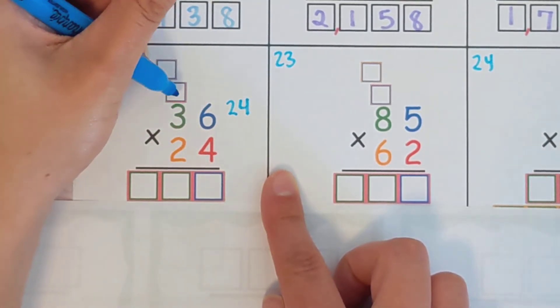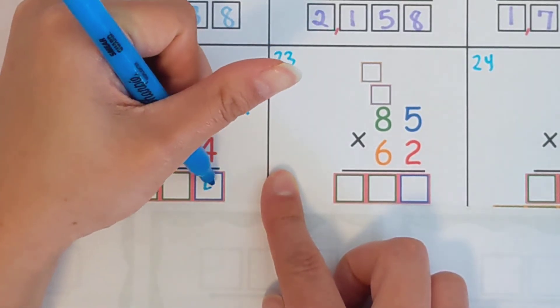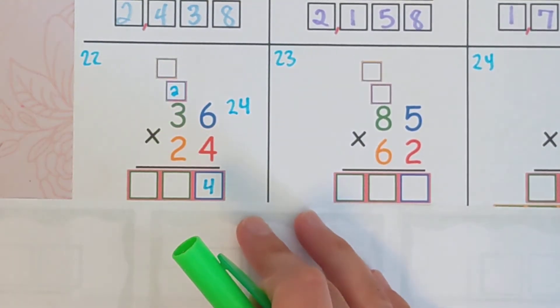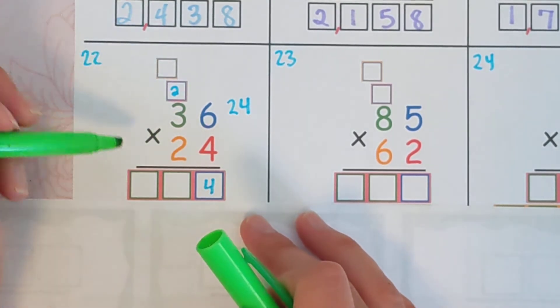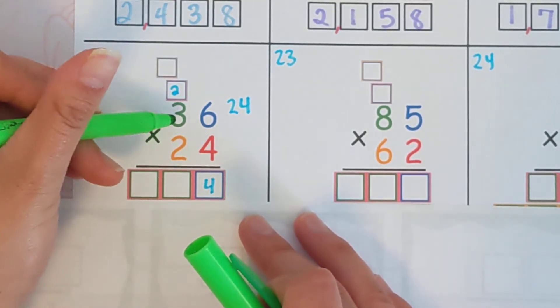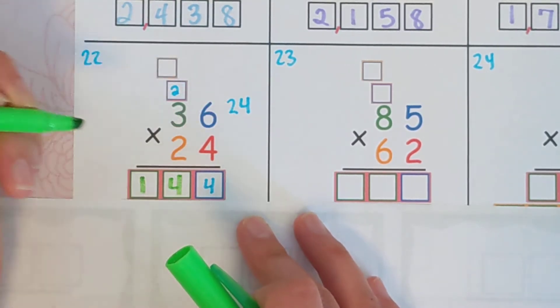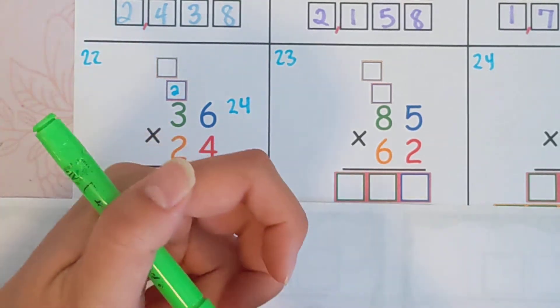And we do need to carry. So 24. And then we would do four times three and add that two. Four times three is 12 plus two is 14. So 36 times four is 144.